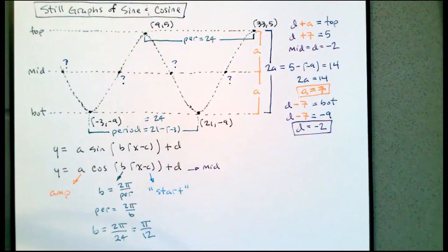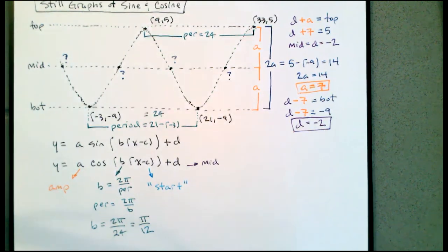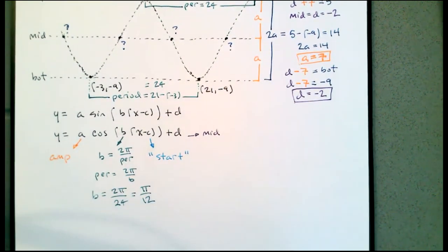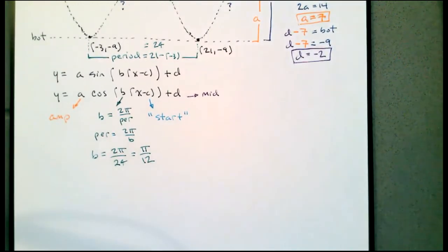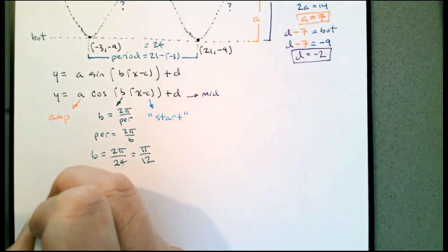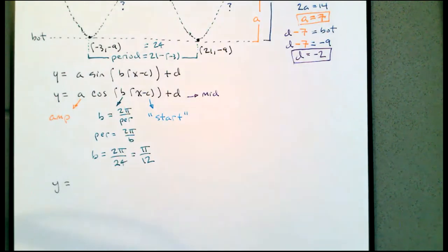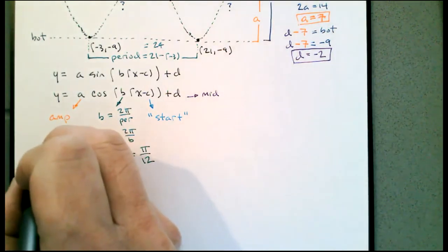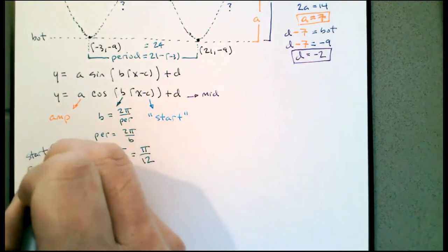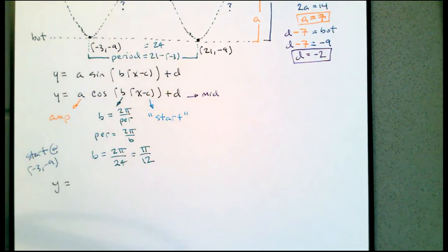We can use this information to write cosine equations right away — we don't need to know where any of the middle points are. Let's make sure we have an answer to the problem first. Let's pick a starting point: I want to start at negative 3, negative 9, which is a bottom point.